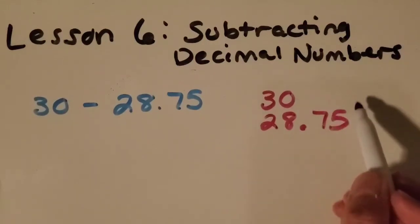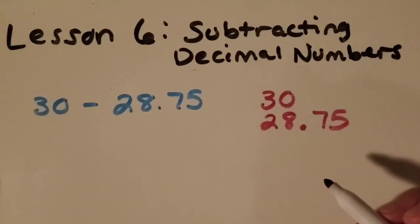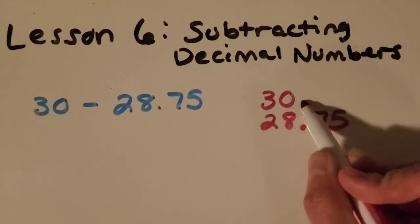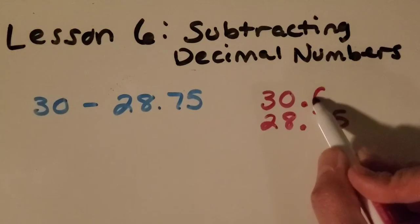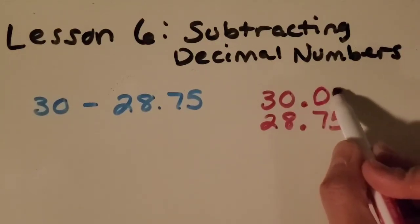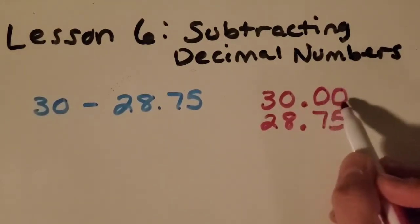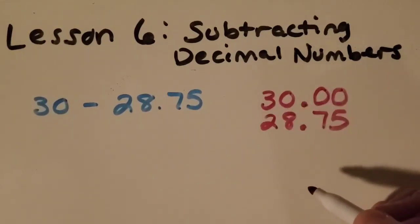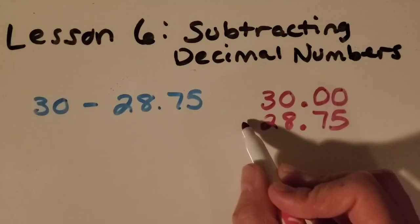I know this looks kind of funny up here right now, so do you guys have any ideas? What can we do? Okay, good job. We can put, just like we tried in another problem, we can put zeros in the decimal places because it doesn't change the fact that this is still 30 wholes. Okay, now I can start subtracting.